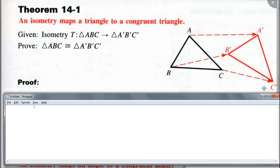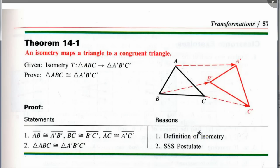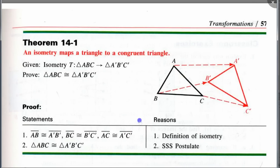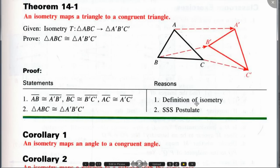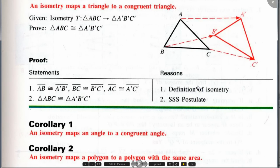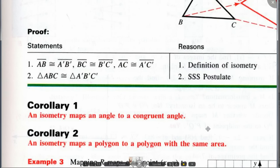From this theorem we get some corollaries. Do you think it will preserve the angle measure? Yes. An isometry maps an angle to a congruent angle. If the two triangles are congruent, what do you know about corresponding parts of congruent triangles? They are congruent. What about the areas? They're the same. So the second corollary: an isometry maps a polygon to a polygon with the same area, because polygons are made up of triangles.